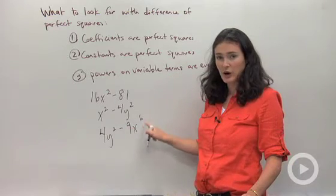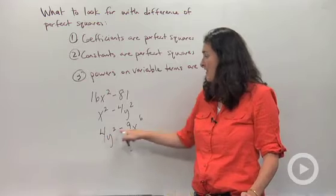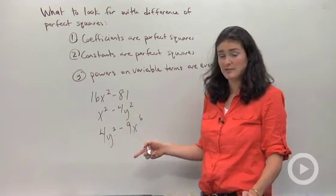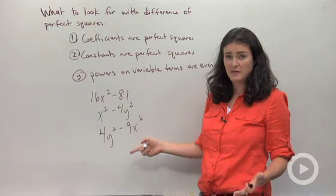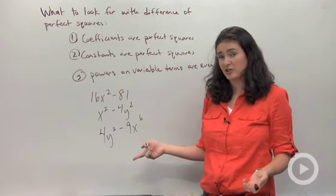I have two different variables, they both have even exponents, and my coefficients are perfect squares. So these do represent the difference of perfect squares and a factoring shortcut.